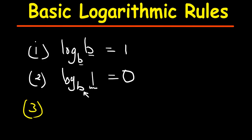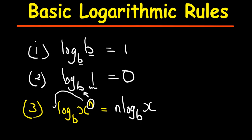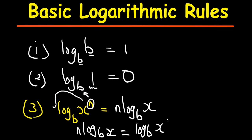Number 3 is the power rule, which allows us to drop the power. If I have log base B of x to the power n, this will be the same as n·log base B of x. If we have a log and an expression raised to a certain power, we can drop that power in front. Conversely, if we have n·log base B of x, we can raise the power to get log base B of x to the power n.